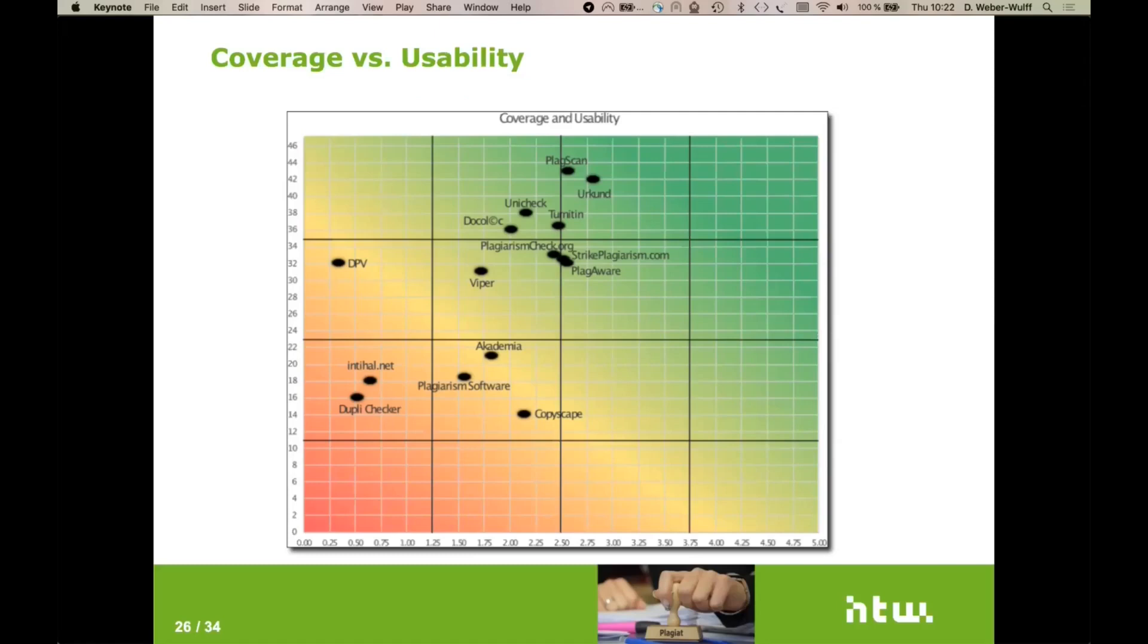Then at least two researchers scored the results that we got from the software systems on a scale of zero to five. Five would have been perfect. We managed to find all the sources and it was exactly covered up. And this is here in this quadrant where you can see none of the systems came anywhere close to finding all of the plagiarism. Of course, the worst was the translation plagiarism. That just did not work.